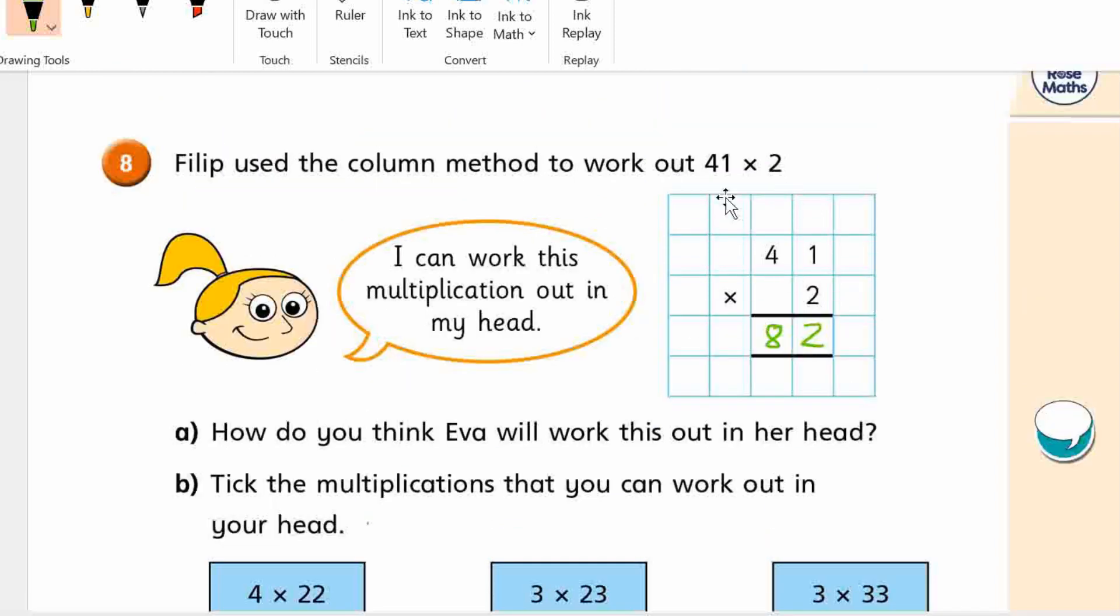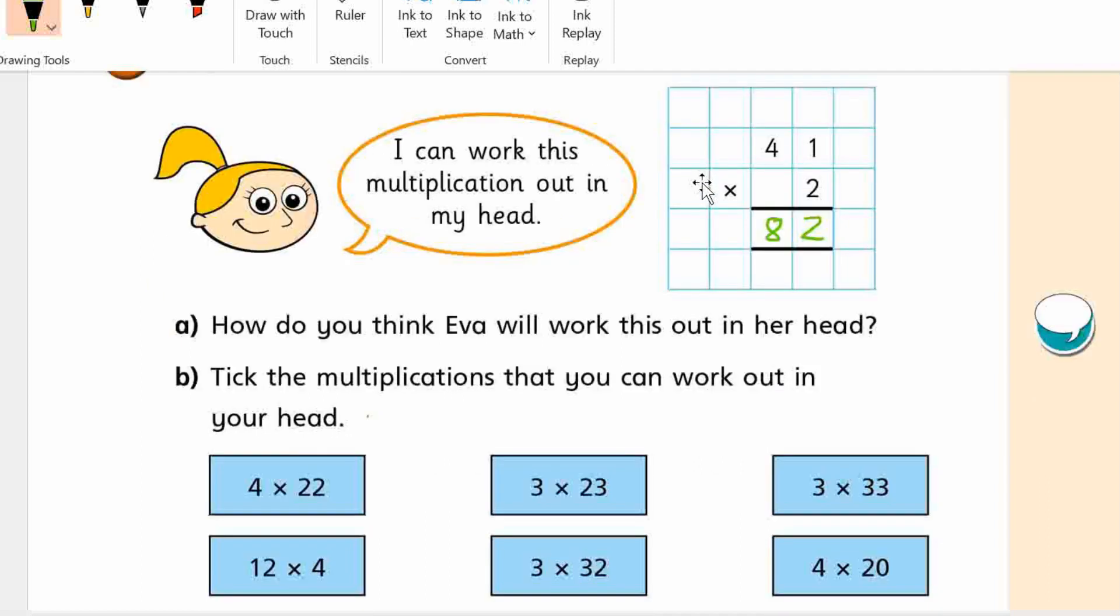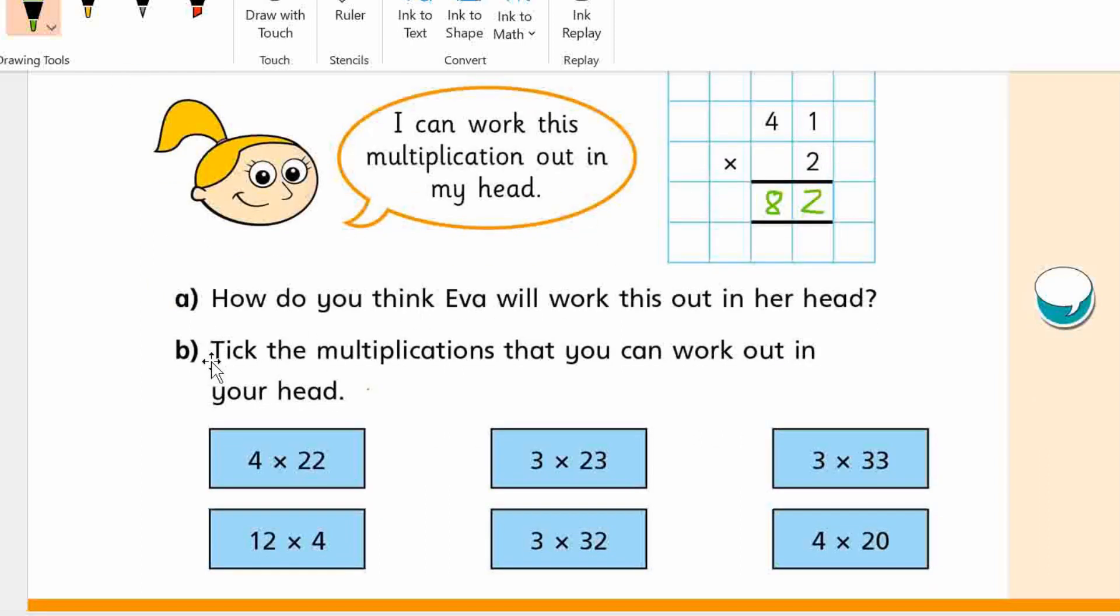How do you think Eva will work this out in her head? Well, I think she'll do basically what we did. 2 times 1, you can work that out in your head. 2. 2 times 4 is 8. Here we are. Tick the multiplications that you can work out in your head.